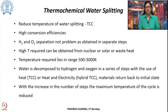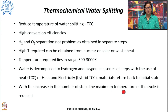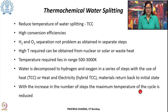It is observed that as the number of steps in the thermochemical cycle increases, the maximum temperature of the step with the highest temperature also reduces. So, with an increase in the number of steps in the thermochemical cycle, the maximum temperature of the cycle decreases.